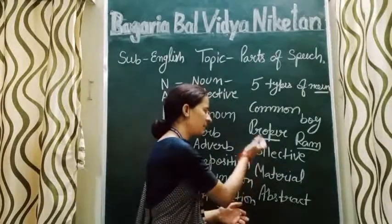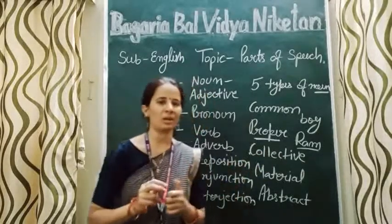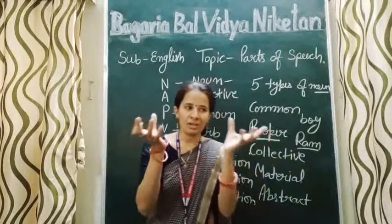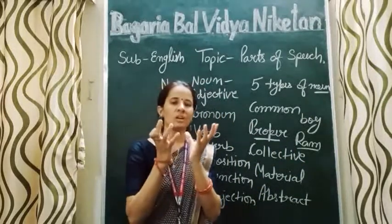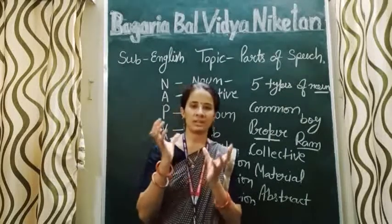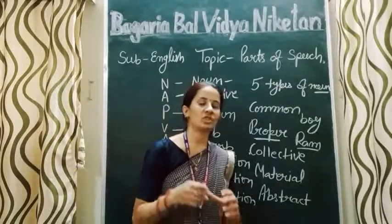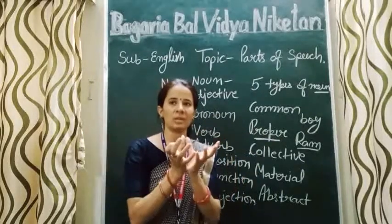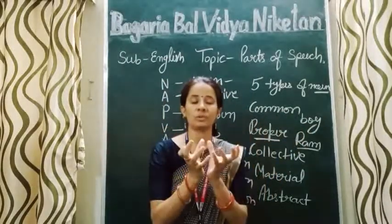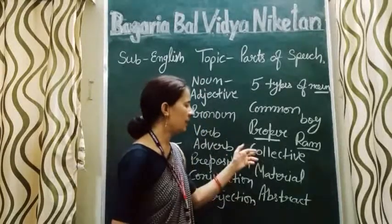Collective noun — we can know by the name itself. The collective noun is the name of a collection, a group. Collective noun kiska naam hai — a collection ka, a group ka. For example, a bouquet of flowers — flowers ka group, bunch hota hai, usko bouquet bolte hai. Bunch of keys — chabiyon ka guchha. A forest of trees — trees ke group ko forest bolte hai. A fleet of ships — ships ke group ko fleet bolte hai. Jab kisi alag-alag cheezon ka group hota hai aur hum usko a particular name deite hai, usko hi collective noun bolte hai.